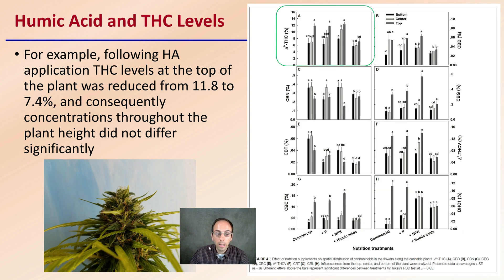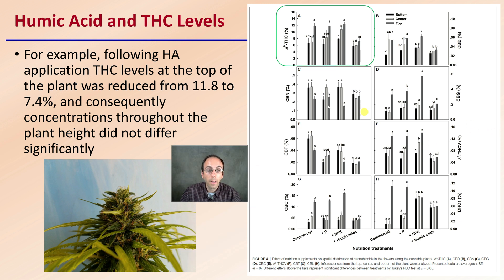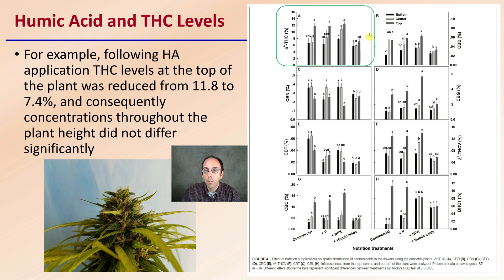So, humic acid and THC levels. Following humic acid applications, THC levels at the top of the plant were reduced from 11.8% to 7.4%. Concentrations throughout the plant height did not differ significantly. Looking at the top, center, and bottom portions of the plant, there was an overall reduction from 11.8% to 7.8% THC levels — which is a little concerning if we're looking at trying to maximize cannabinoids.